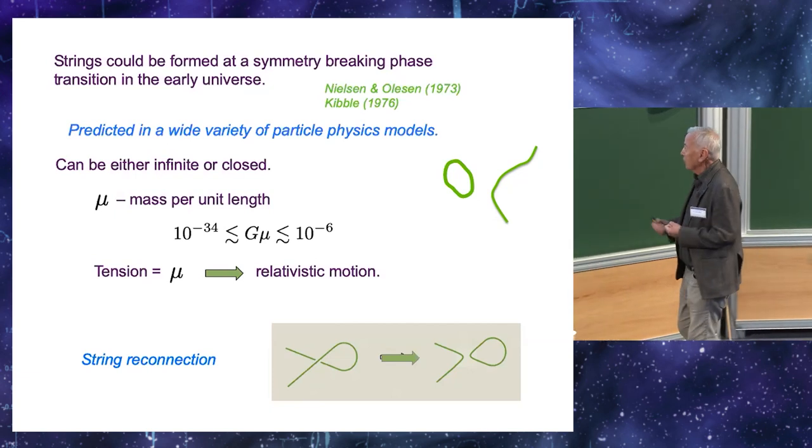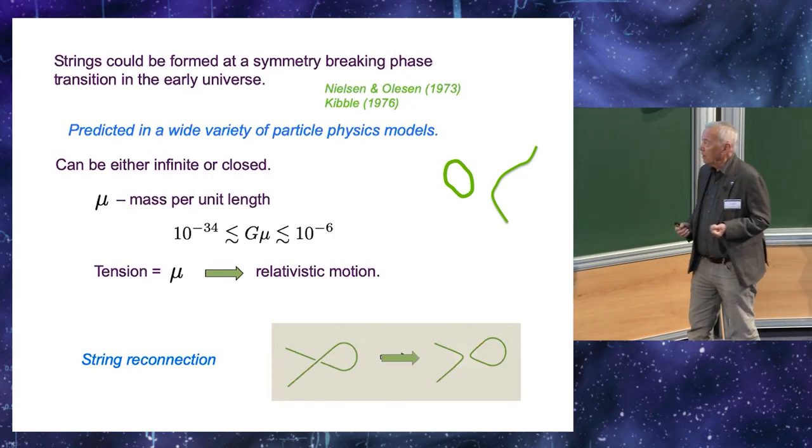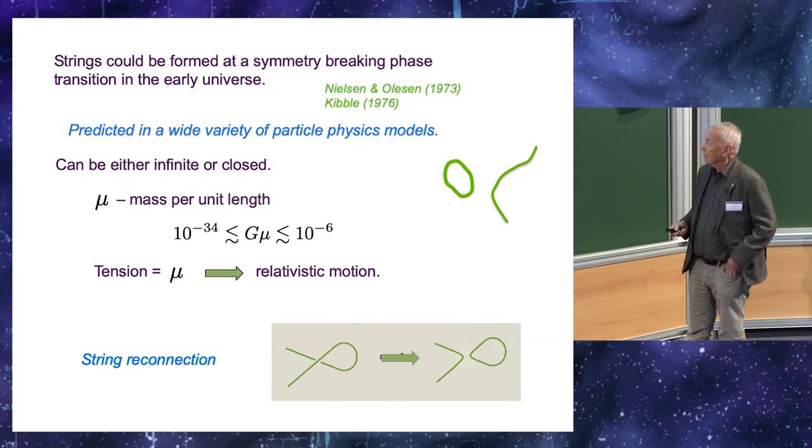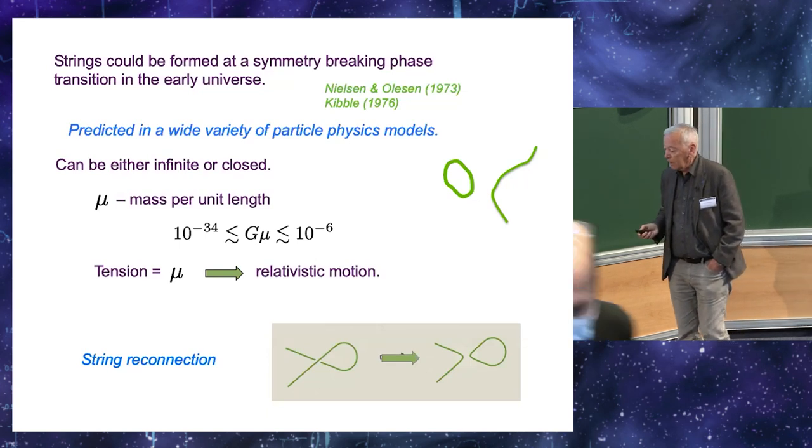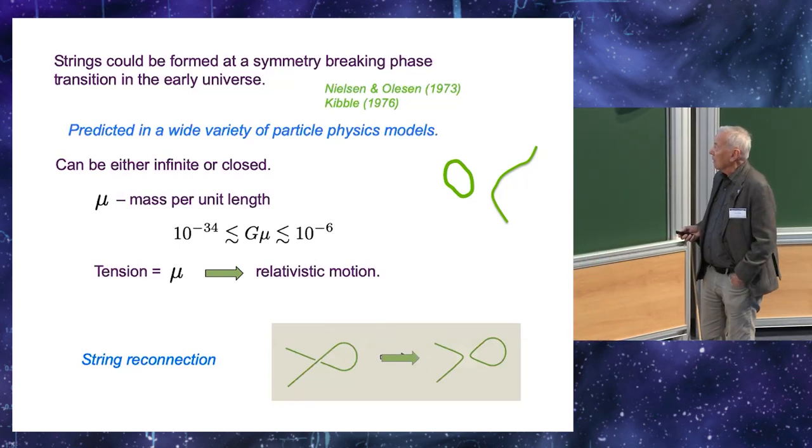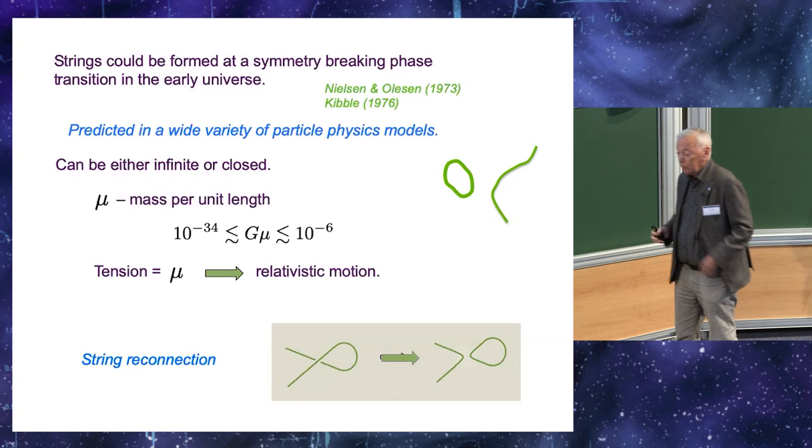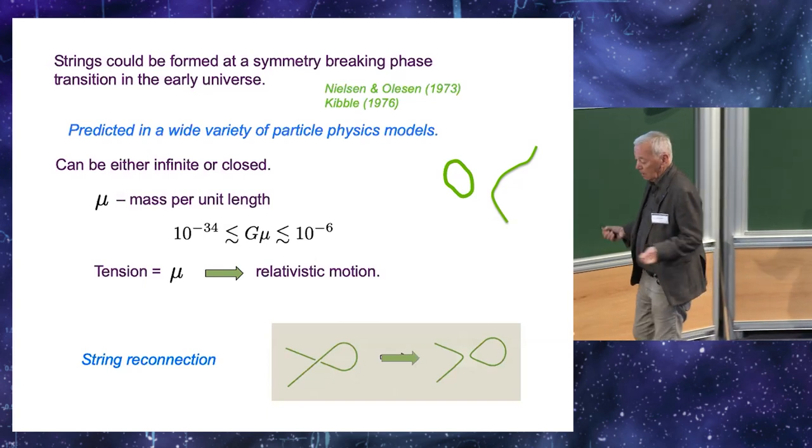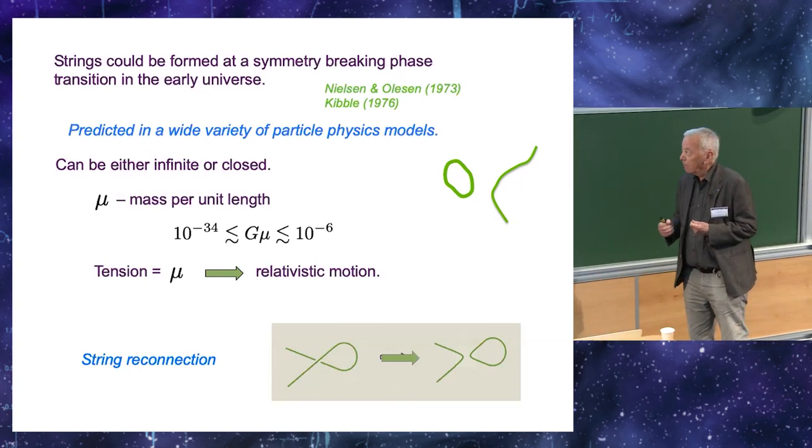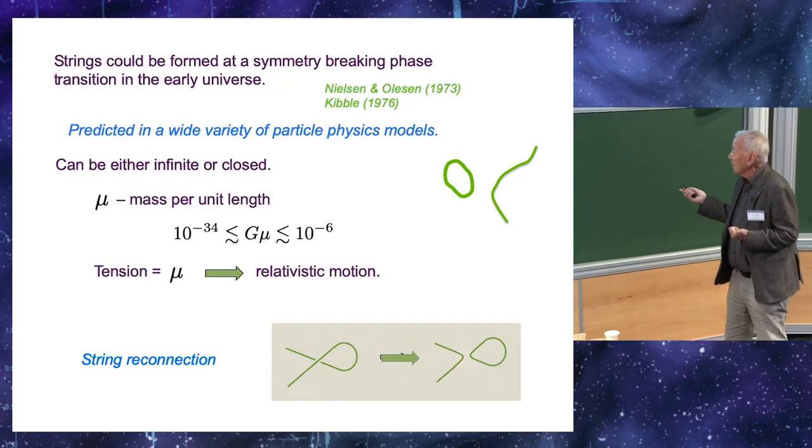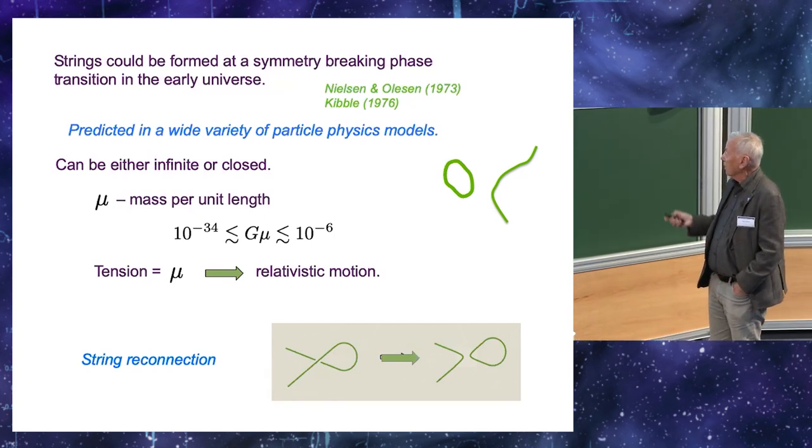The strings have large tension, which is equal to the mass per unit length, which is just a consequence of relativistic invariance. And because of this large tension, if you have a closed loop of string, it oscillates relativistically.